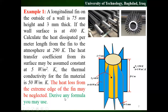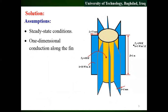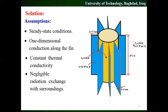Of course, if you have a question, you can derive any formula you might use. This is the solution — this is our information. The assumption is steady state condition, one-dimensional conduction along the fin, and negligible radiation exchange with the surrounding on the fin side. The end of the fin is insulated.